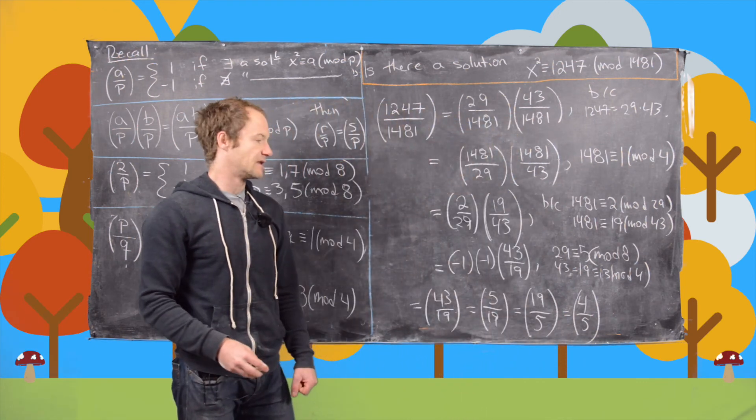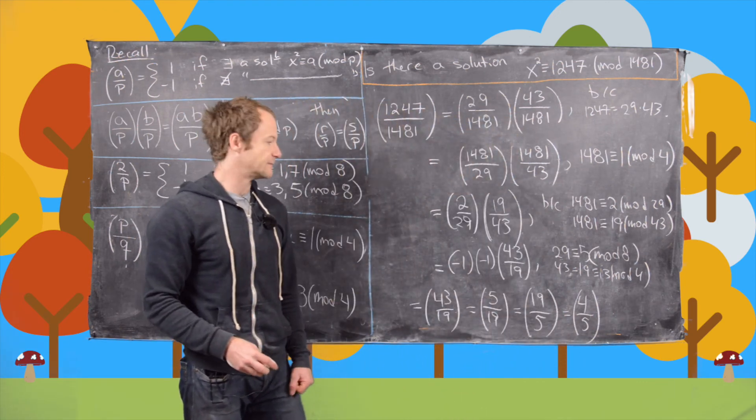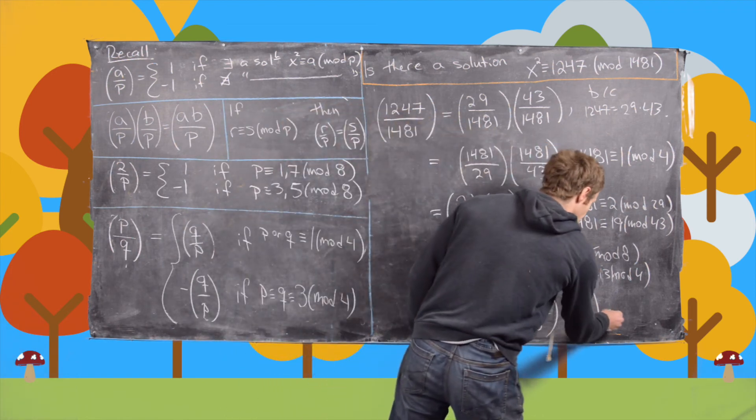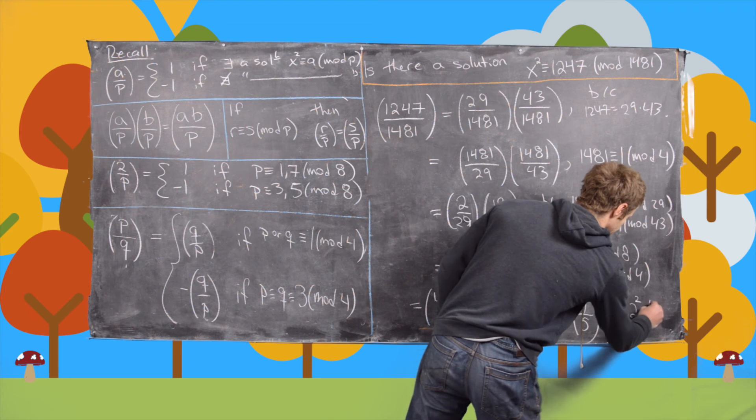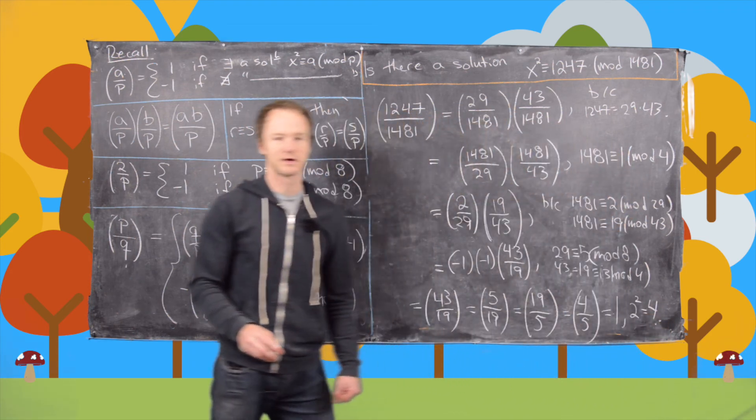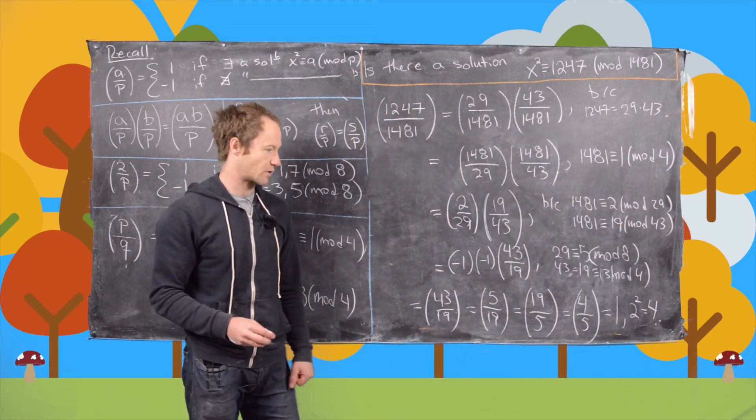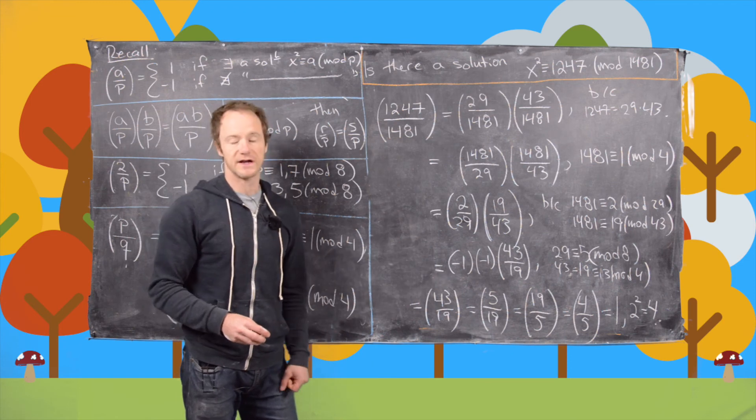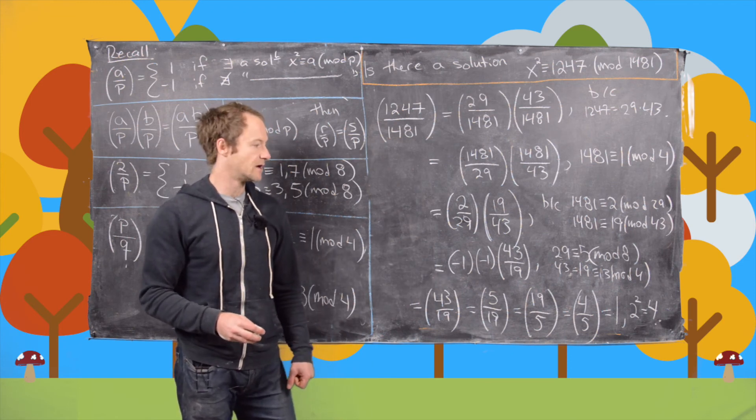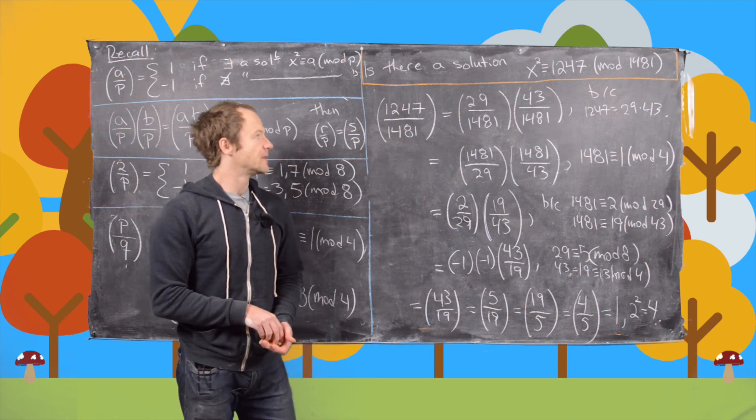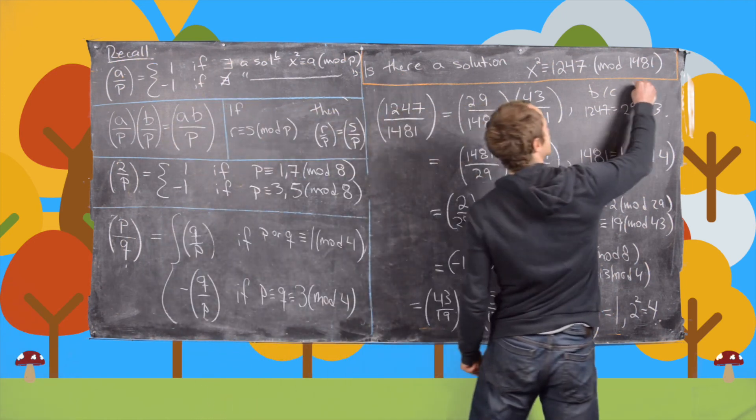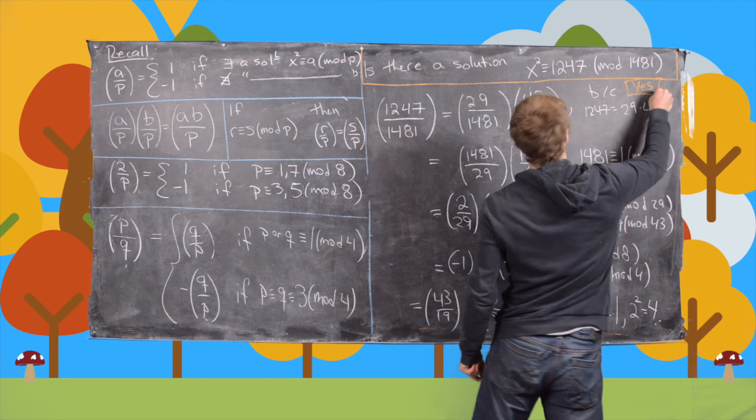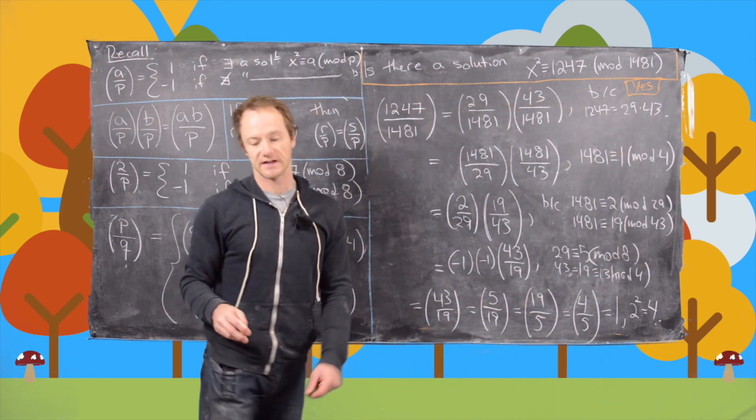And now we're down to one that we can answer the question easily. So this is obviously equal to 1. And that's because 2 squared equals 4. In other words, 4 is obviously a perfect square. So that means 4 is a quadratic residue mod 5. And so what we get, is there a solution to this? Yes, there is a solution to this.